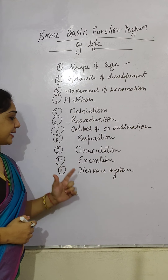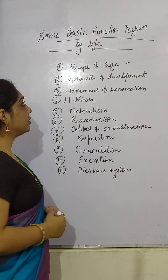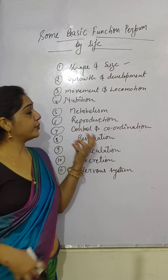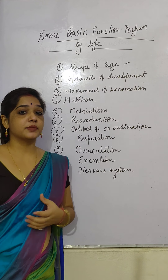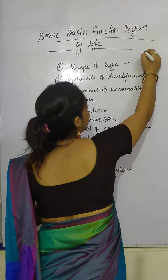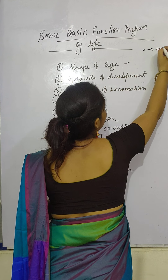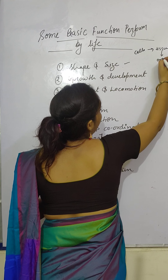Shape and size — how does an organism get its shape and size? The formation of an organism comes from cells. A cell combines with more than one cell to form tissue. Cells form tissue, tissue forms an organ, and an organ forms an organ system.